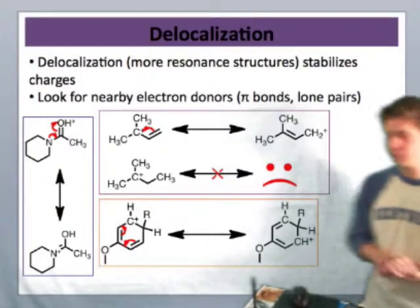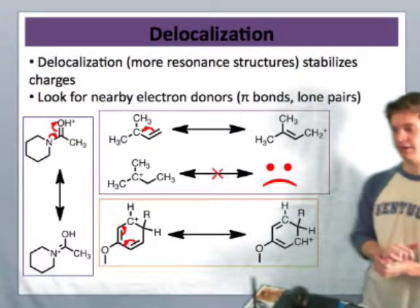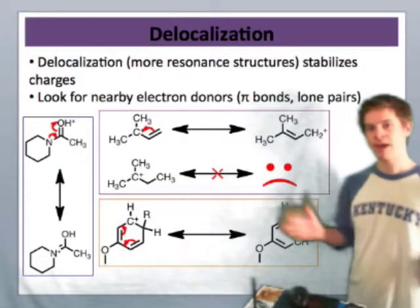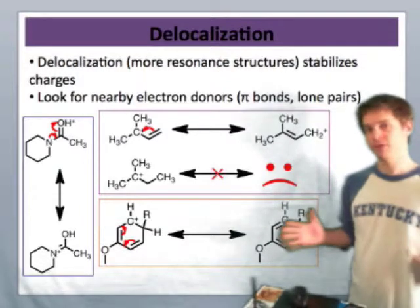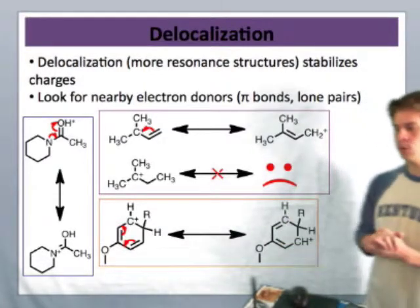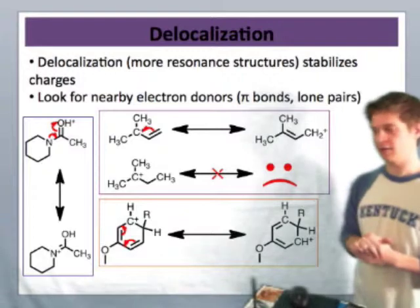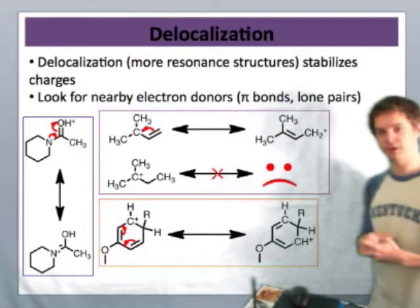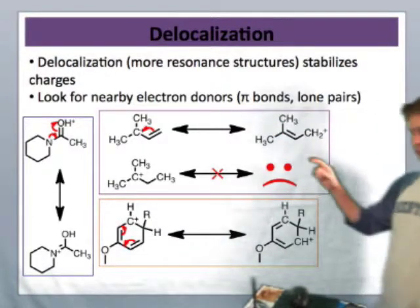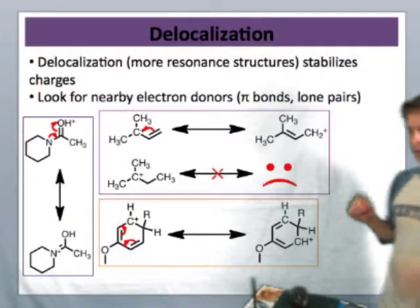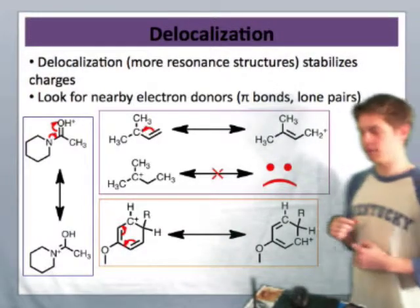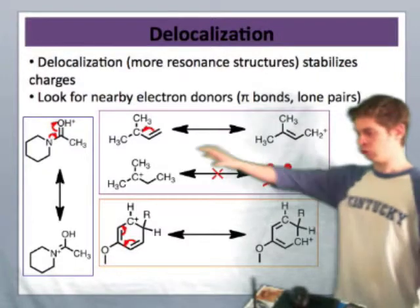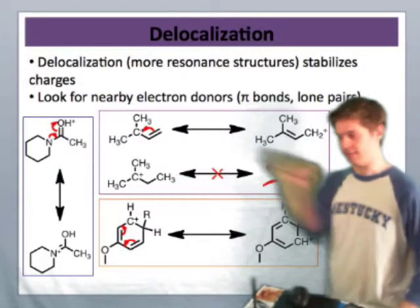The first factor involved here is delocalization. By delocalization, I mean the spread of positive charge, in this particular case, over a large number of atoms. If you take a look at the central box here, you can see that in the bottom structure, there are no resonance structures to spread the positive charge around — so that positive charge is localized on this central carbon atom.